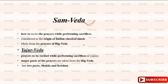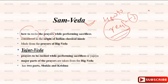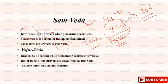The next Veda is the Sam Veda. In the Sam Veda, information is given on how to recite the prayers — means how to recite the prayers during worship of god. This process is given here. The Sam Veda is also called the origin of Indian classical music, and most of its hymns are also given here.